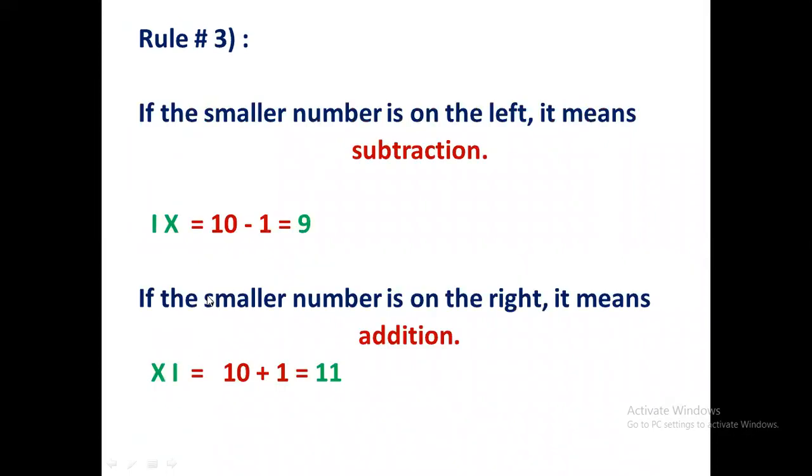Rule number 3. If there are two numbers, if the smaller number is on the left, look at this one. Bigger number is 10 and smaller number is 1. Bigger number is at the right-hand side and smaller number is on the left-hand side. So if the smaller number is on the left, it means subtraction. Means you will subtract 1 from 10, 10 minus 1, that will be 9. So IX means 9.